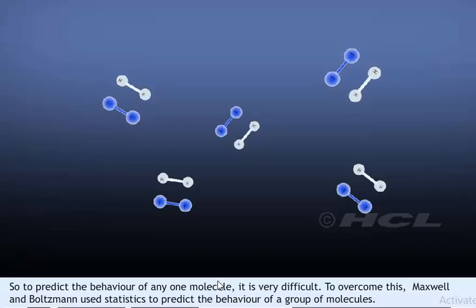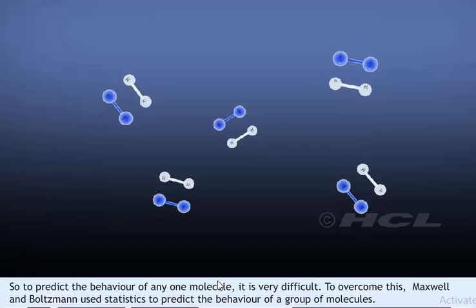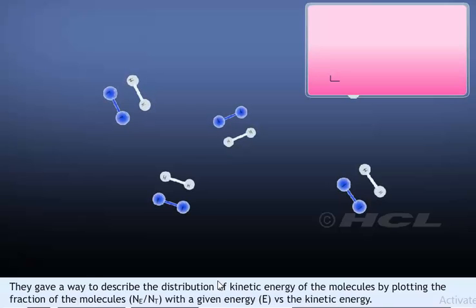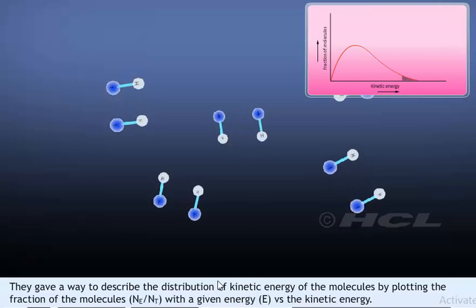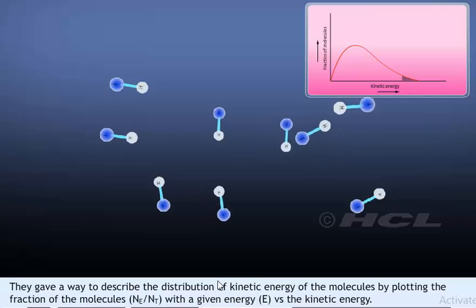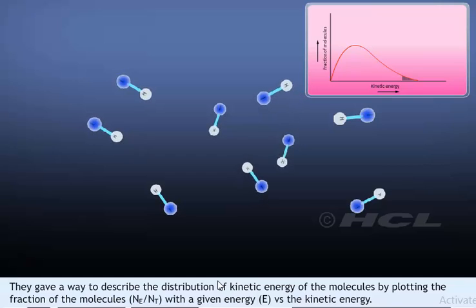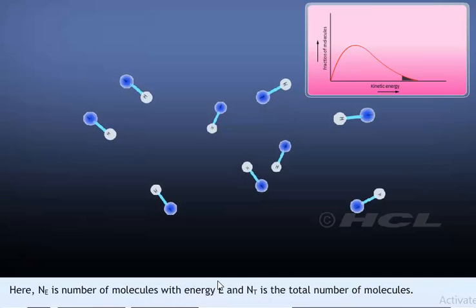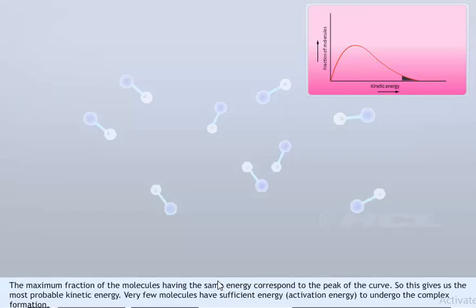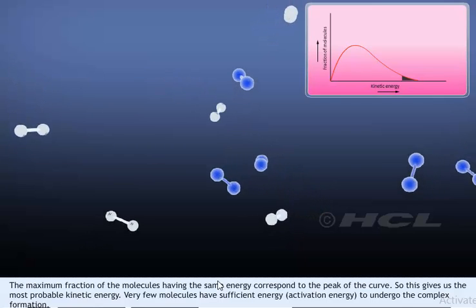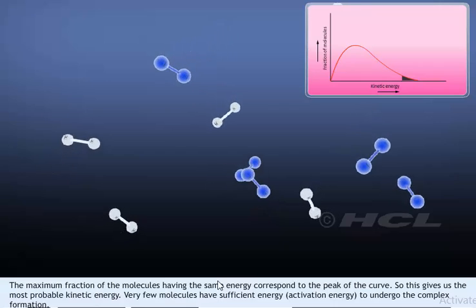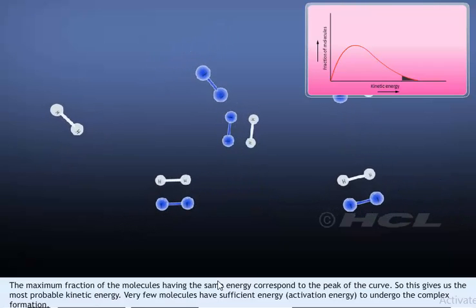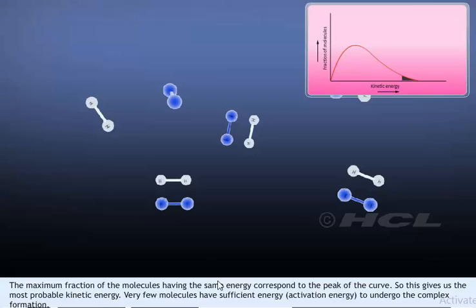To overcome this difficulty, Maxwell and Boltzmann used statistics to predict the behavior of a group of molecules. They described the distribution of kinetic energy by plotting the fraction of molecules Ne/Nt with a given energy E versus the kinetic energy, where Ne is the number of molecules with energy E and Nt is the total number of molecules. The peak of the curve corresponds to the most probable kinetic energy. Very few molecules have sufficient activation energy to undergo complex formation.